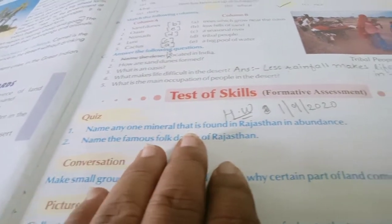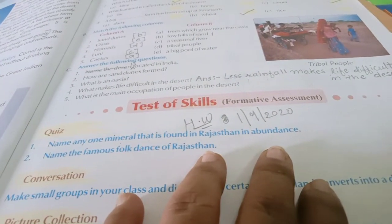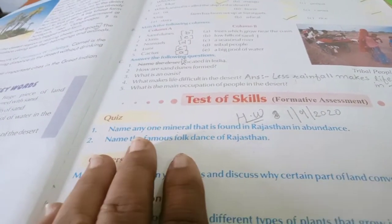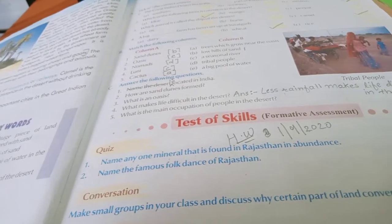Name any one mineral that is found in Rajasthan in abundance. Kaunsa mineral hai jo Rajasthan mein paya jata hai, to koi bhi ek mineral ke naam likho. Bahut saare minerals hain. Bahut saare aapko mil jayenge. Search karo aap.